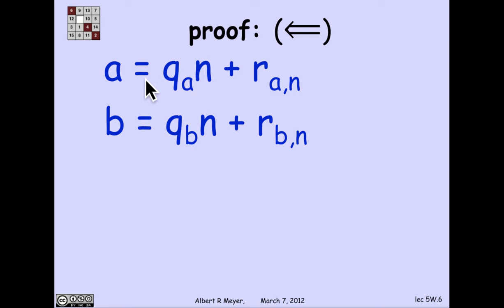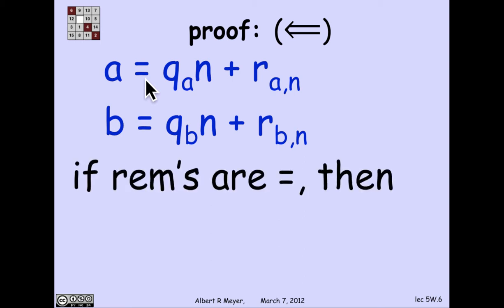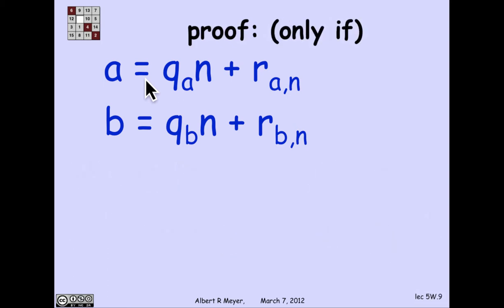And what we're given here is that the remainders are equal. But if the remainders are equal, then clearly, when I subtract a minus b, I get q_a minus q_b times n. Sure enough, a minus b is a multiple of n. And that takes care of that one.